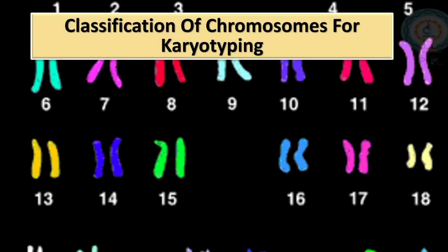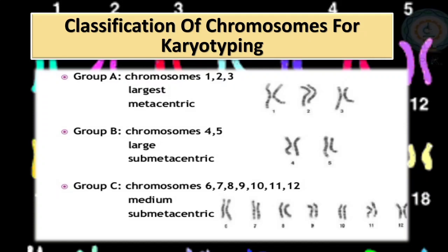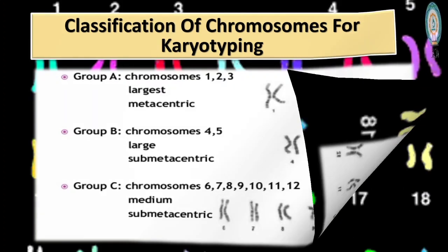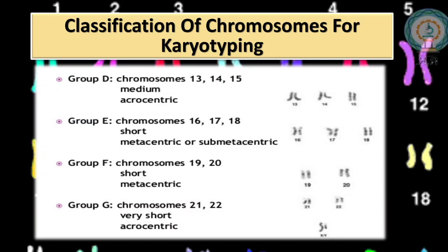For classification, chromosomes are divided into groups for karyotyping. Group A consists of chromosomes 1 to 3, which are the largest and metacentric. Group B consists of chromosomes 4 and 5, which are large and submetacentric. Group C consists of chromosomes 6 to 12, which are medium in size and submetacentric. Group D consists of chromosomes 13, 14, and 15, which are medium in size and acrocentric. Group E consists of chromosomes 16 to 18, which are short and metacentric or submetacentric.